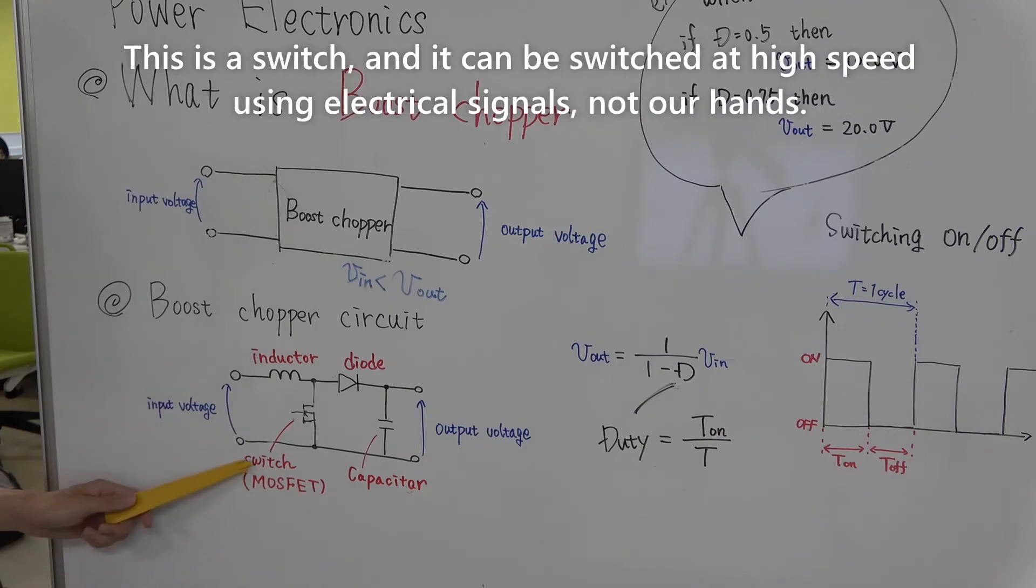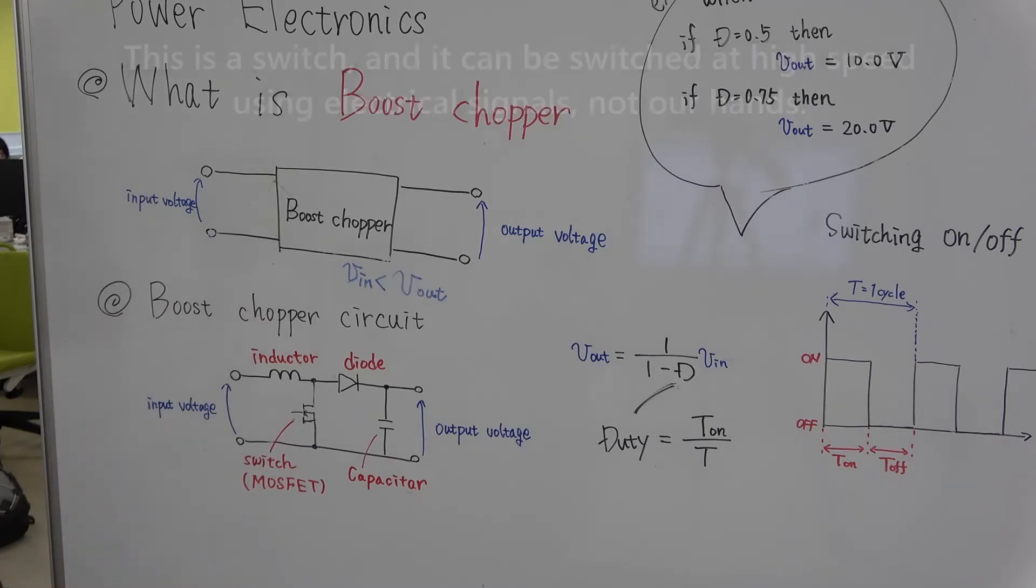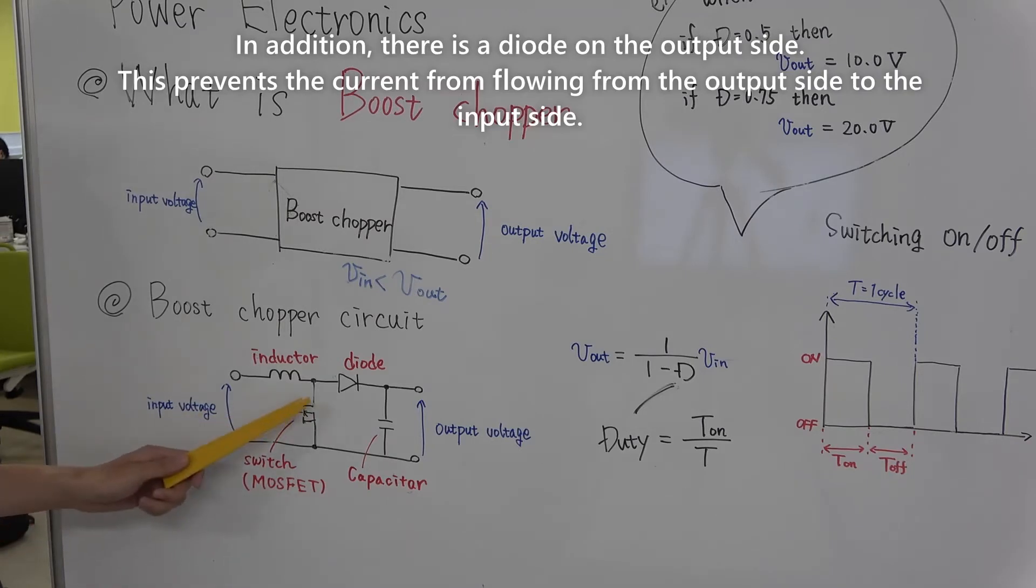This is a switch, and it can be switched at high speed using electronic signal, not our hands. In addition, there is a diode.